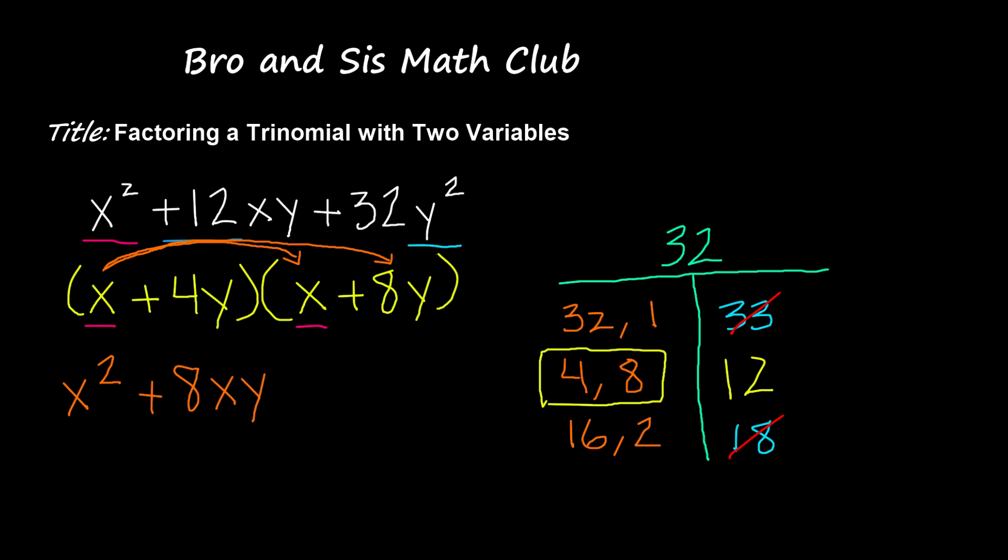And now I'm going to distribute the 4y to the x, which gives us positive 4xy. And 4y to the positive 8y, which gives us positive 32y squared.